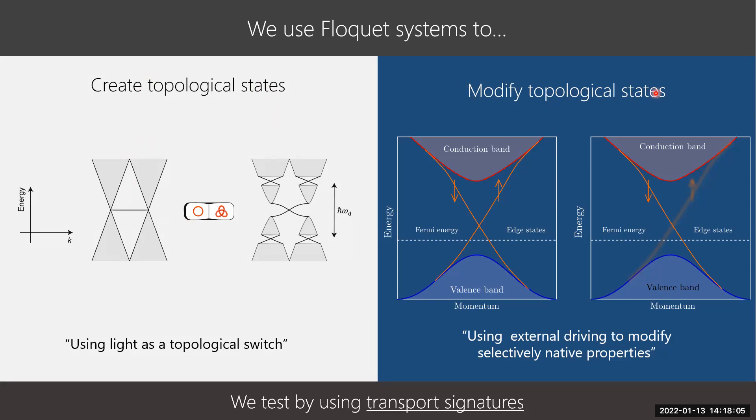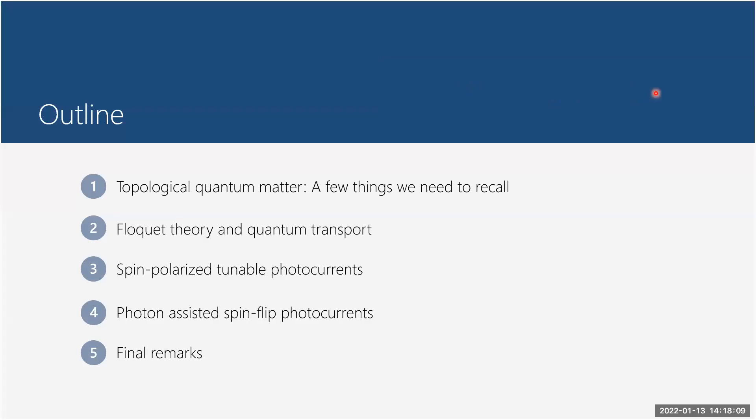Here is the outline of the talk. First I will address some topological background that most of you will be familiar with. Then I will briefly cover Floquet theory — the last talk already provided some ground on it. In sections three, four, and five I will present original results from my PhD research.